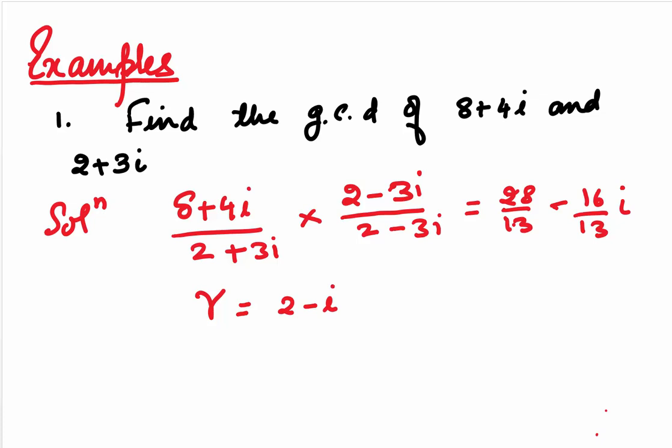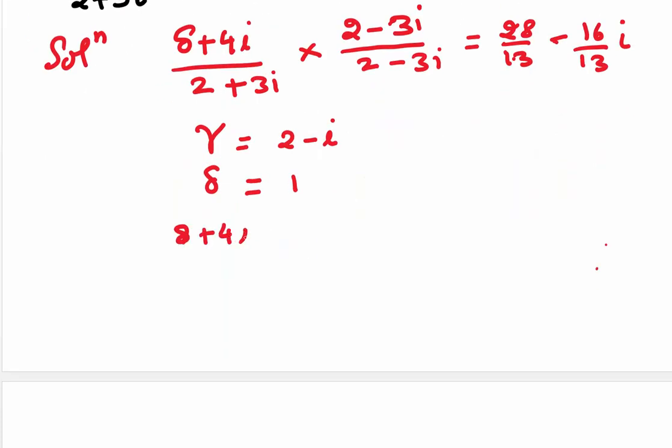When we find our delta, that would be nothing but 1. You can check that. And we will write our 8 plus 4i is equal to 2 plus 3i into 2 minus i plus 1.